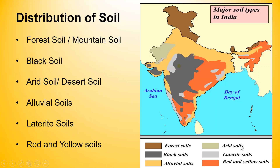Alluvial soil is found in the Northern Plains and is one of the most fertile soils of India. Then we have black soil. Red or yellow soil can also be seen on the map. Arid soil is essentially found in the desert area, also known as desert soil. And then we have laterite soil. All these soils we are going to study in detail.